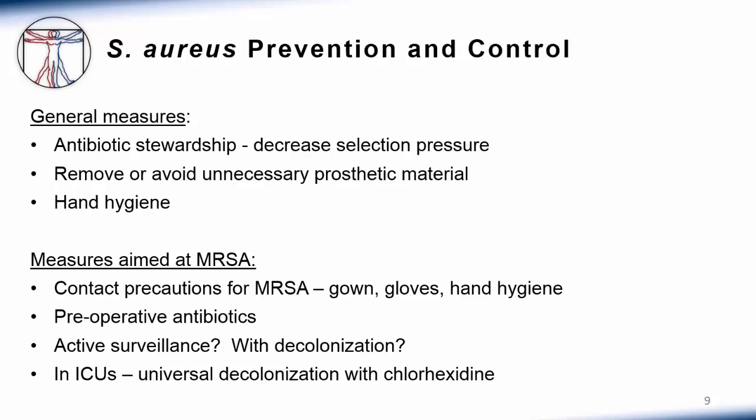Given how hard these infections are to treat and the associated morbidity and mortality, there's been an understandable emphasis on prevention and control. General measures — not specific to staph aureus but helpful in reducing its incidence — include antibiotic stewardship. Shortly after the introduction of penicillin and then methicillin, resistance developed in staph aureus. In general, the fewer courses of antibiotics given, the less selection pressure on bacteria, and the slower resistance will develop. The key concept is to avoid unnecessary antibiotic courses and give short courses when medically appropriate.